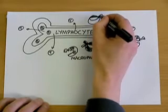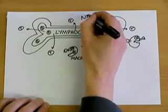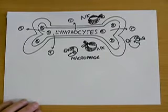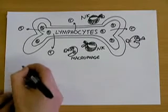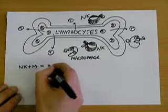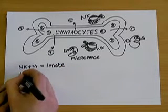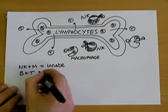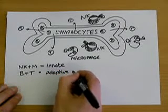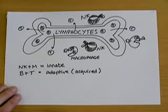Now let's consider the immune response. There are many ways we can divide it up. The natural killers and the macrophages make up our innate immune system. The B and T lymphocytes are our adaptive or acquired immune system — in other words, this is the part that we develop through experience.